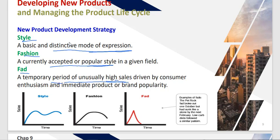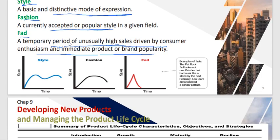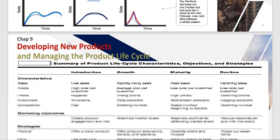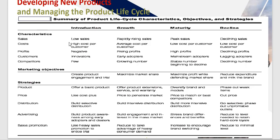A fad is characterized by unusually high sales driven by consumer enthusiasm and immediate product and brand popularity. On the graph, a fad shows steep, high, rapid profit generation followed by a quick fall — unlike fashion or style whose sales are more stable over time.